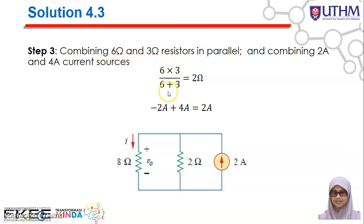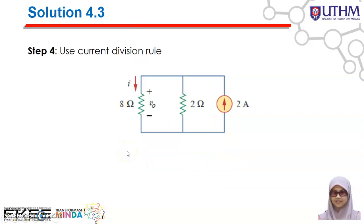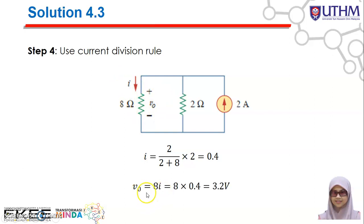Combining 6 ohms and 3 ohms in parallel: (6 × 3) ÷ (6 + 3) = 2 ohms. So now you have 2 ohms in parallel with 8 ohms and a 2-ampere current source. Using the current divider rule, I = [2 ÷ (2 + 8)] × 2 = 0.4 amperes. Applying Ohm's law: V0 = 8 × I = 8 × 0.4 = 3.2 volts.